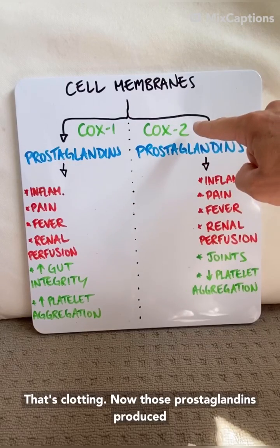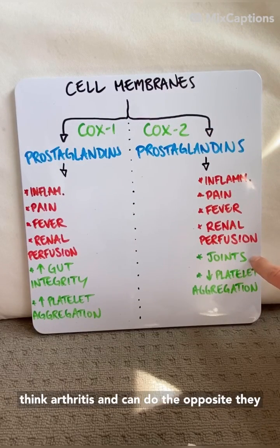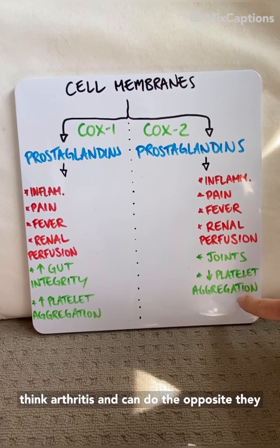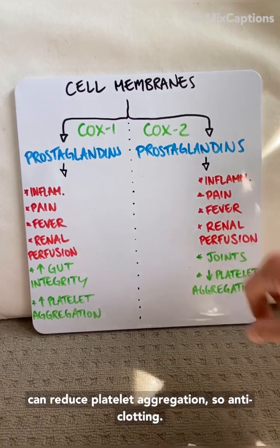Those prostaglandins produced by COX-2 are present in high quantities in joints — think arthritis — and can do the opposite: they can reduce platelet aggregation, so anti-clotting.